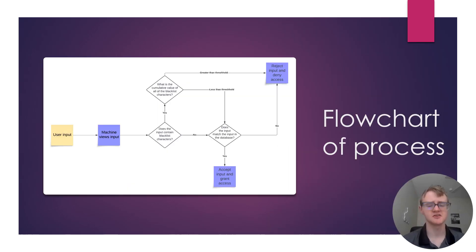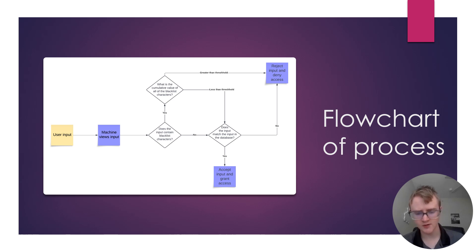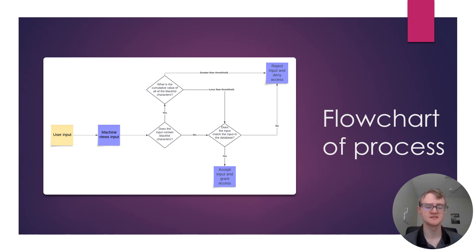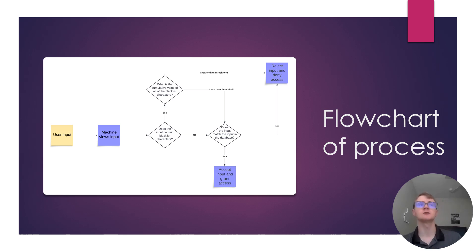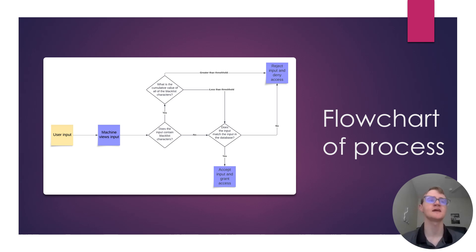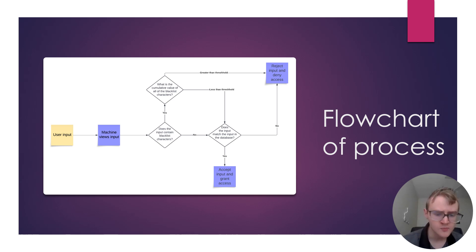This is a basic example of the flowchart of my process. Basically, we have the user input, the machine views the input, and before checking whether it's correct, it will first look for potential blacklist characters.